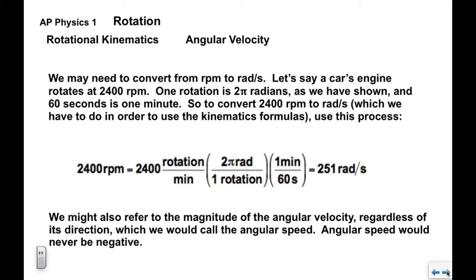We might also refer to the magnitude of the angular velocity — this is the angular speed. Angular speed would never be negative, because we don't pay attention to direction.